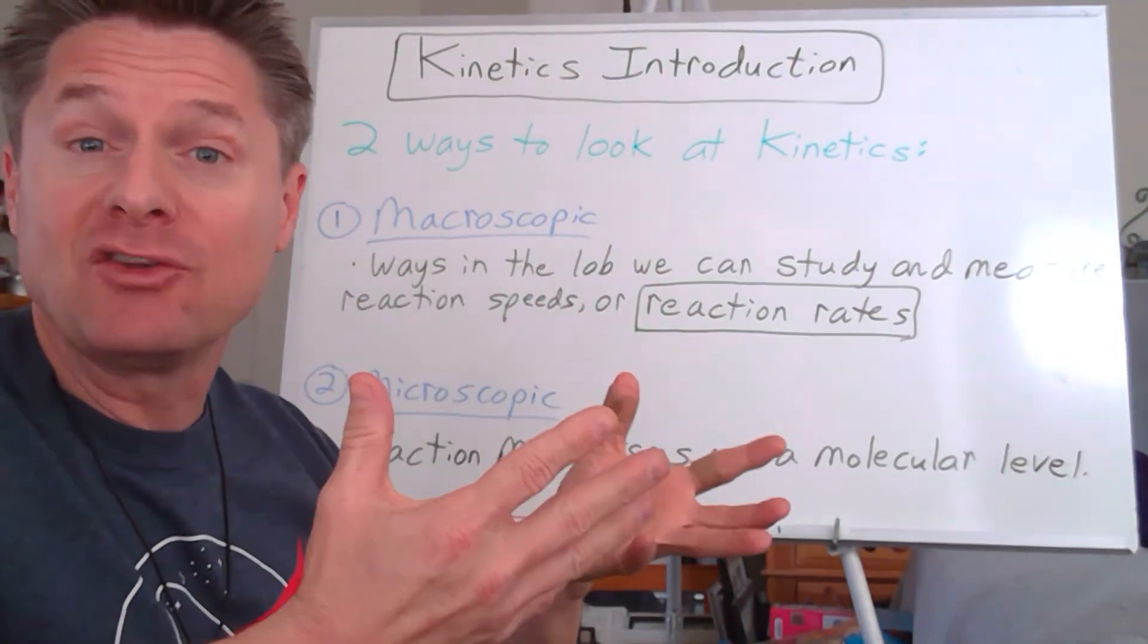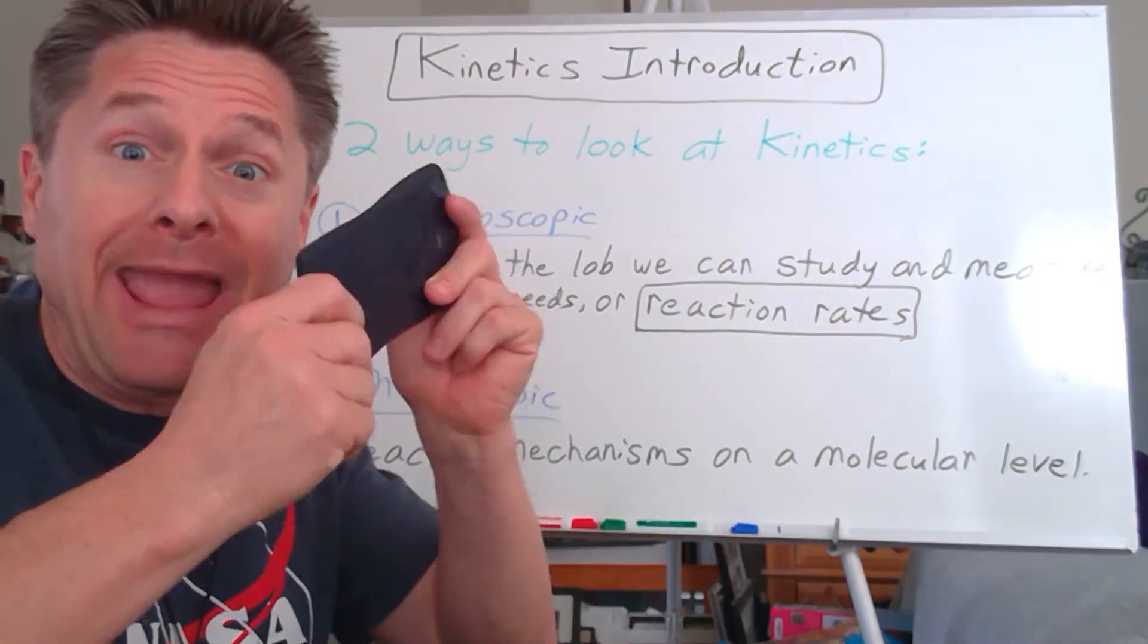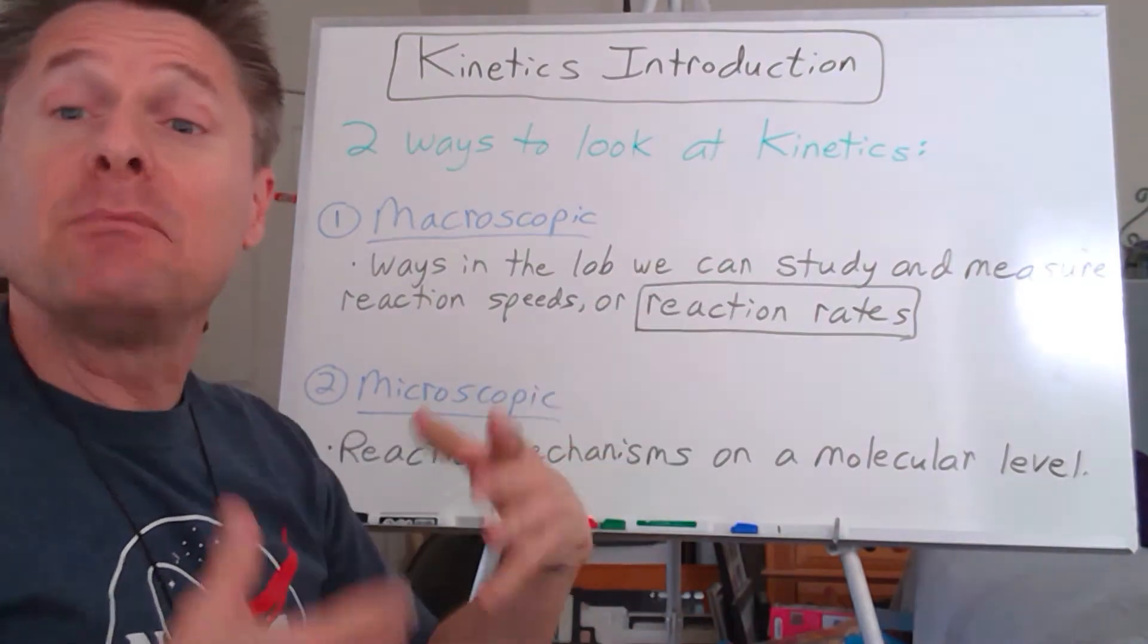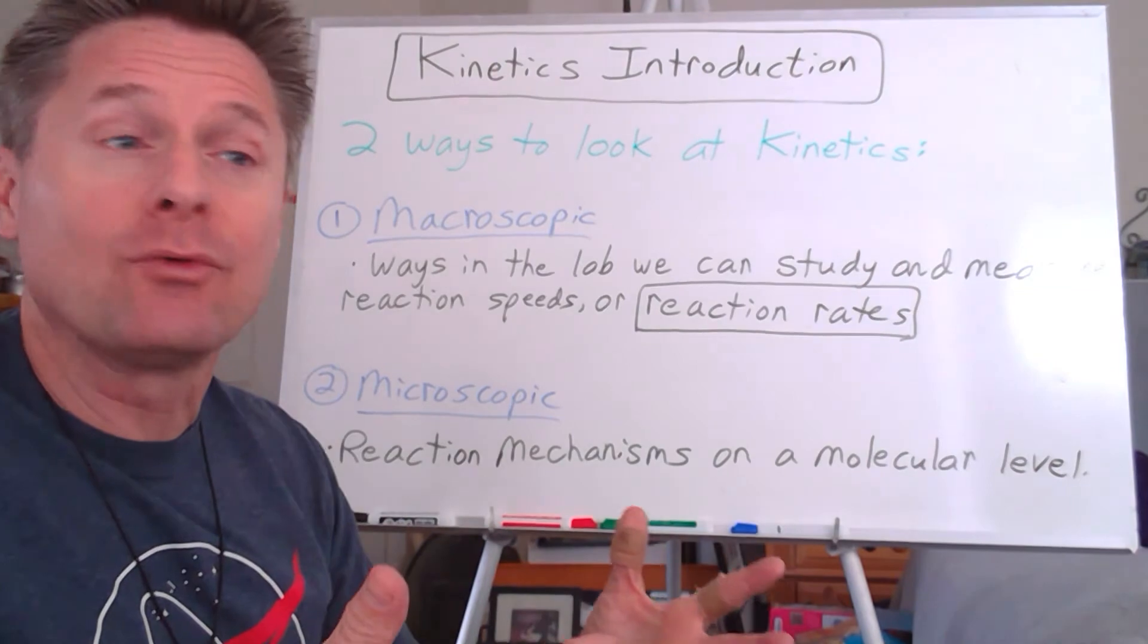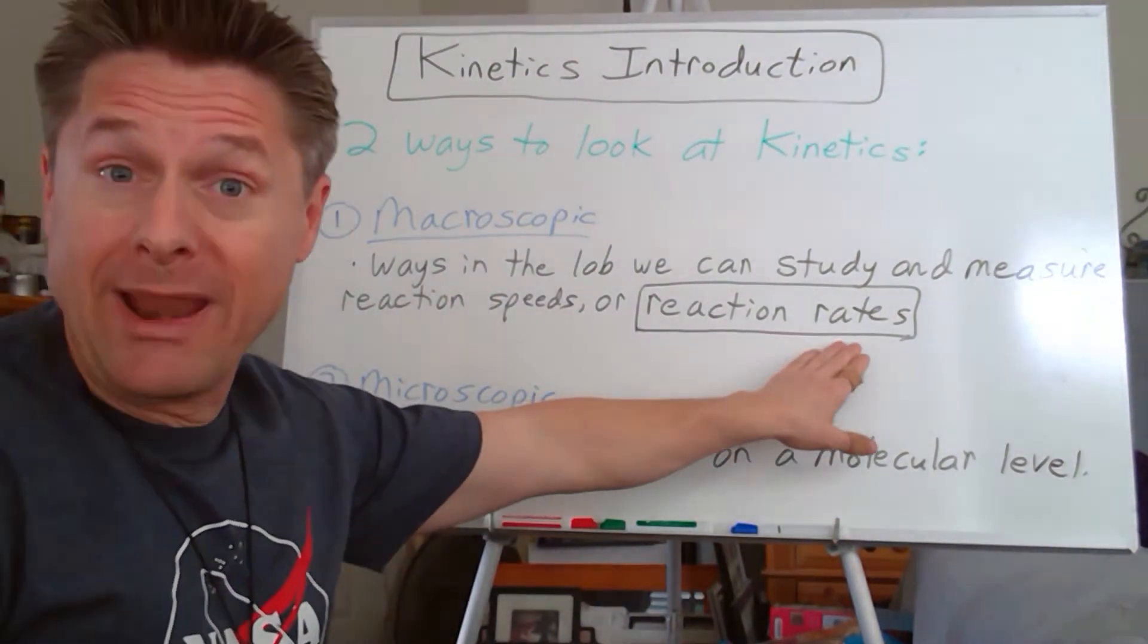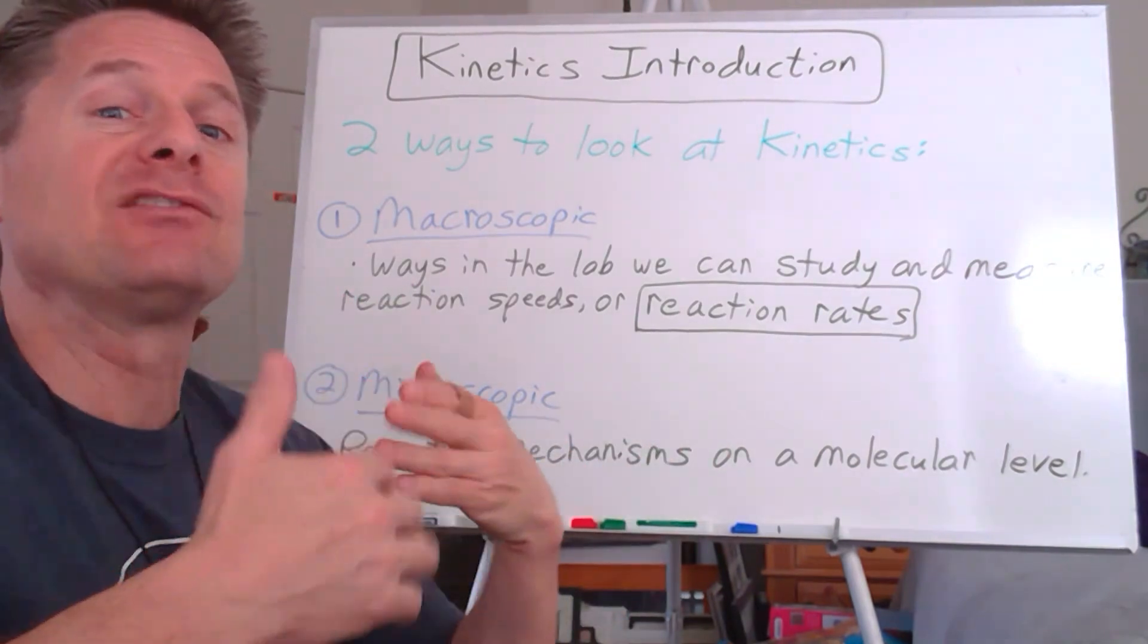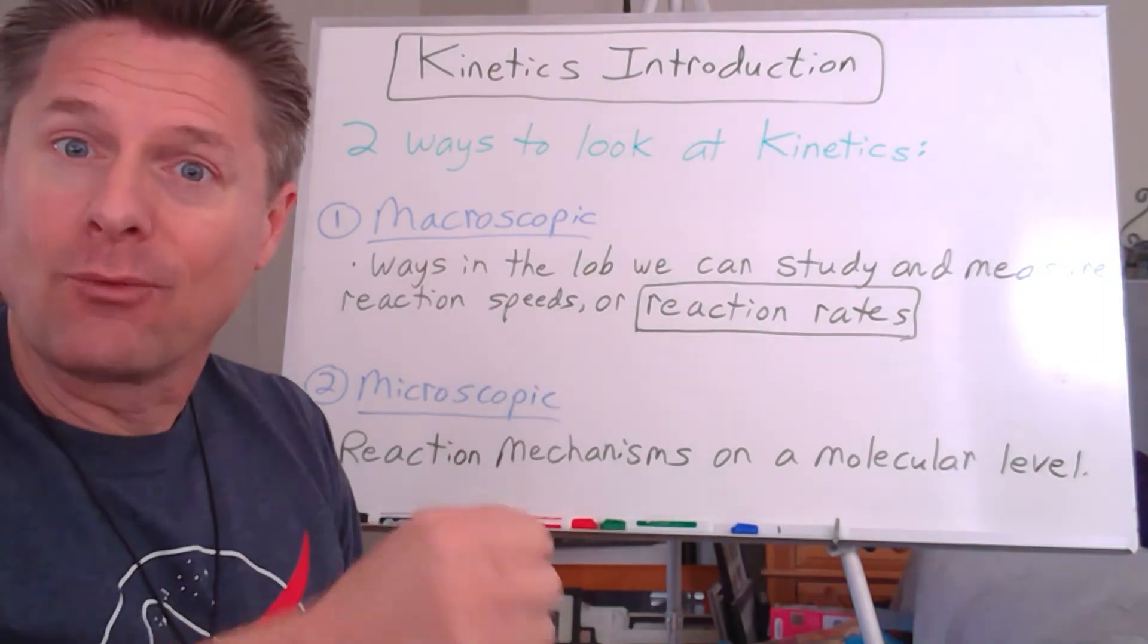Macroscopic—we're going to focus most of our time in, especially with laboratory. What can we see, what can we touch, what can we measure? That's macroscopic. I can hold this calculator in my hand, it's macroscopic. Since we're dealing with kinetics, that's the speeds of reactions. So how can we study and measure those in a laboratory, do calculations, figure out what is the reaction speed? We have a term we use in kinetics called a reaction rate. Instead of speed, we tend to use the verbiage 'rate.'